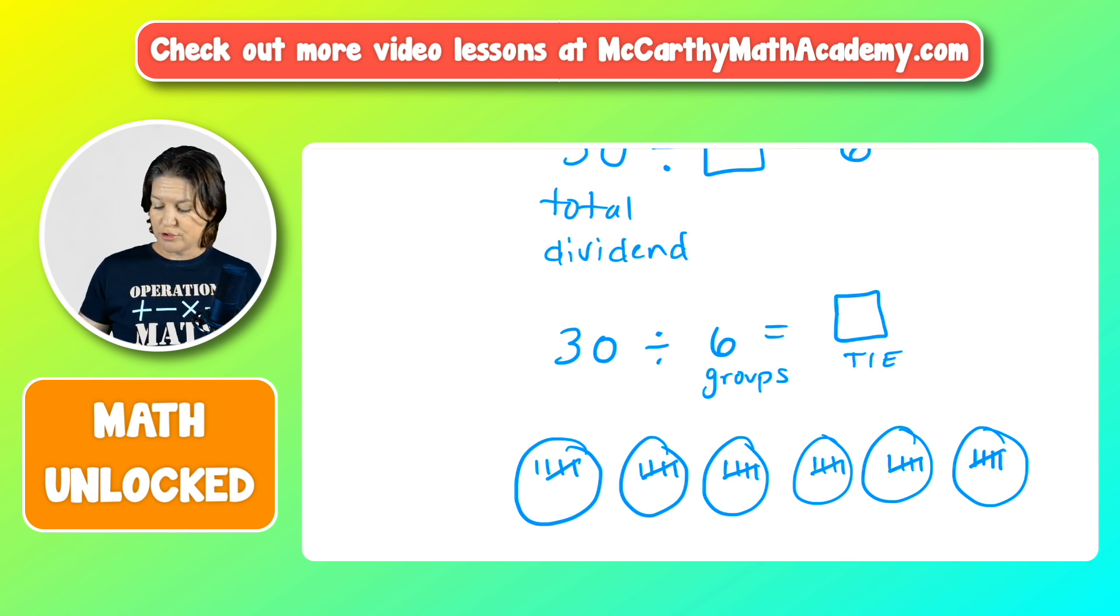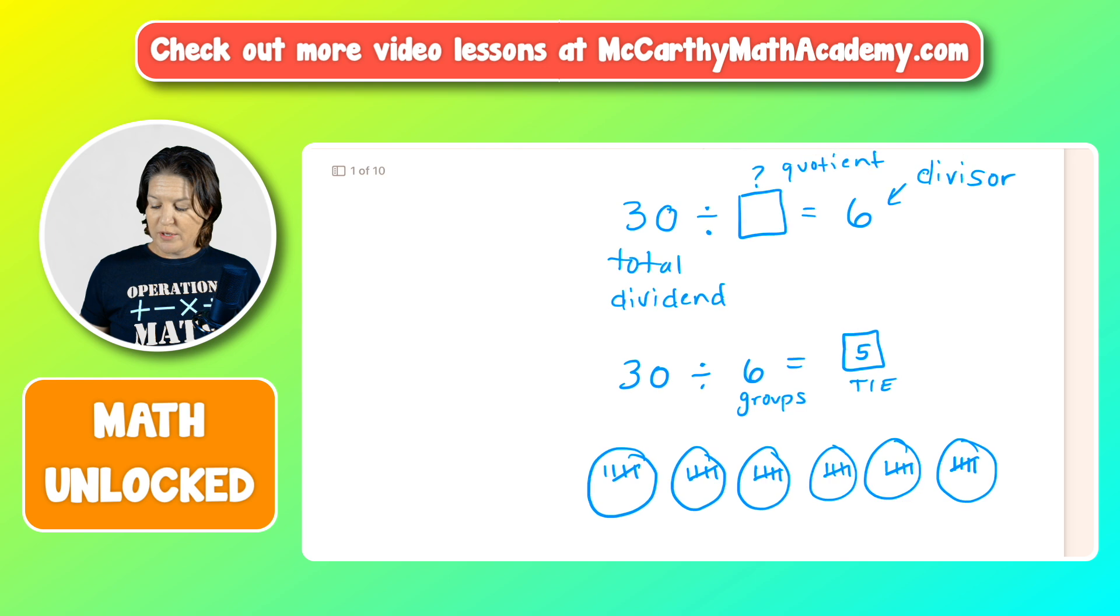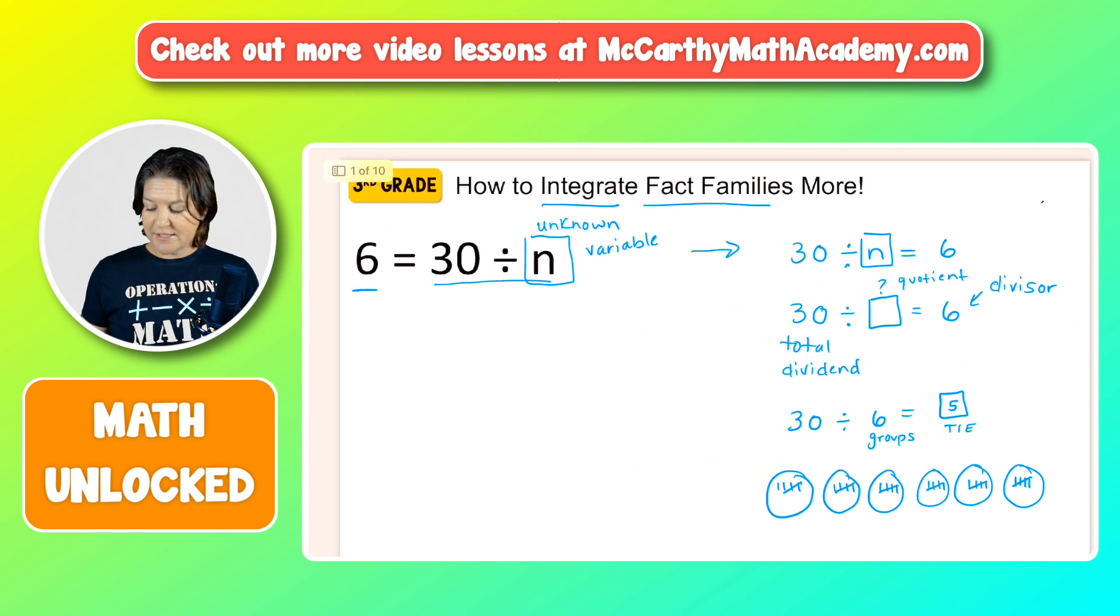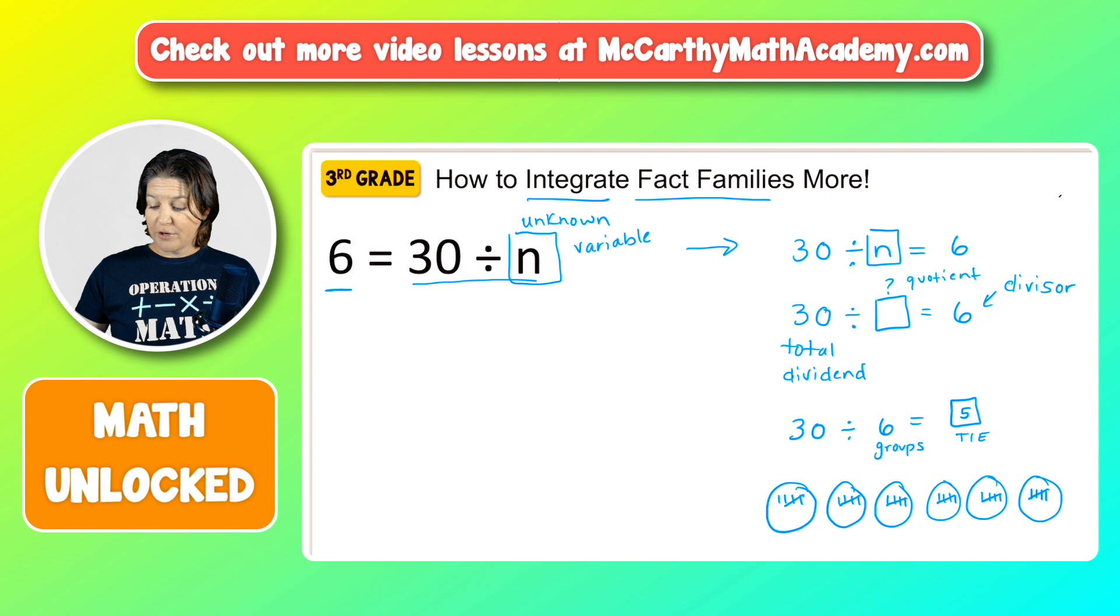So how many things do we have in each? Five, right? Each group has five. So we know that 30 divided by 6 equals 5. Therefore 30 divided by 5 equals 6. Therefore N equals what? Five. So we figured out the value of N, but we also want to use this opportunity to practice integrating fact families more often.